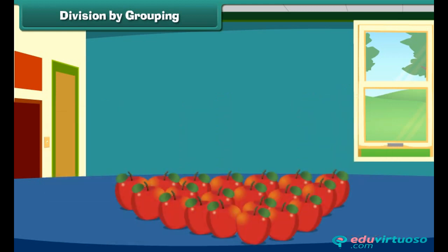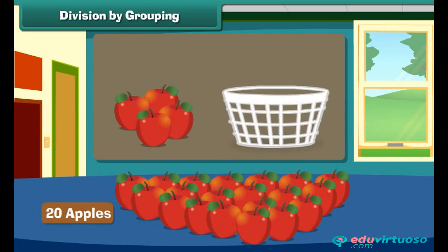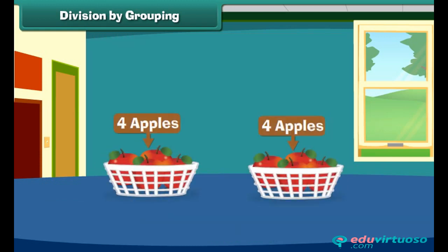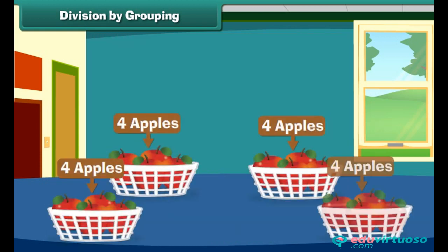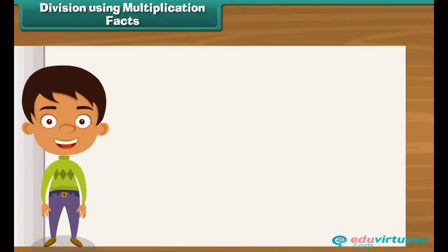There are 20 apples. Four apples can be packed in one basket. How many baskets will be required to pack 20 apples? Make groups of four apples each. Five such groups are possible with 20 apples. Hence, five baskets will be required to pack 20 apples.